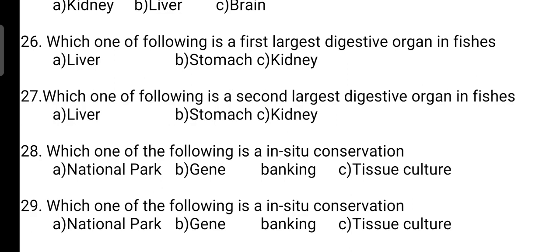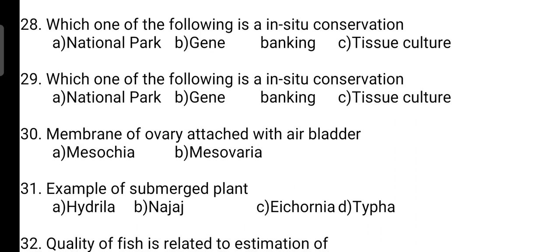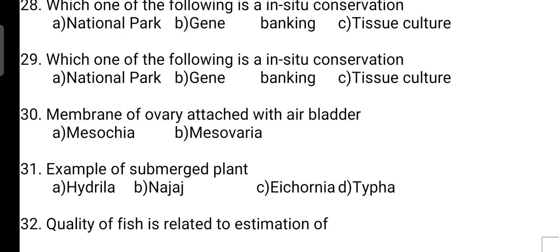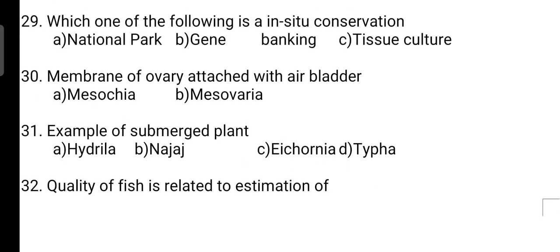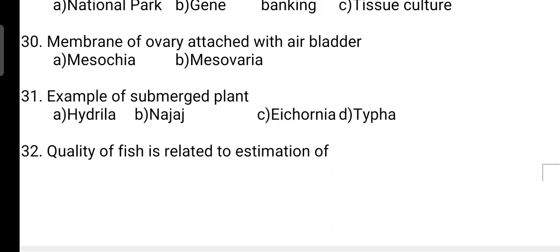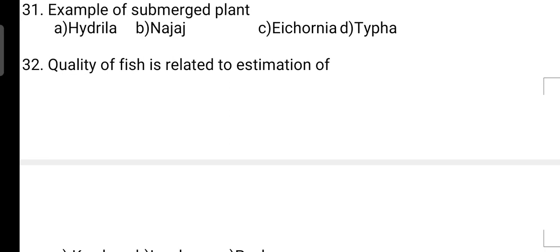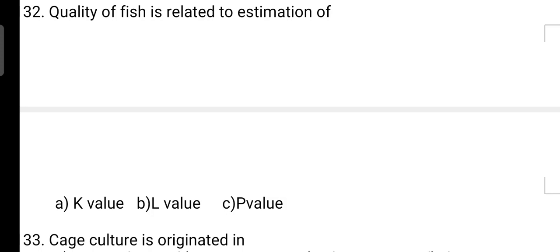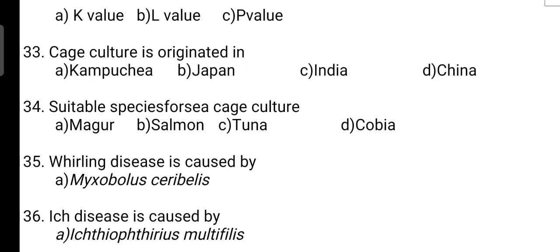Both day is the measure used for calculation of maximum sustainable yield. Kupffer cells are found in the liver. Which one of the following is the first largest digestive organ in fishes? Correct answer is Option A — it is liver. Which one is the second largest digestive organ? Correct answer is Option B — it is stomach. Which one is in-situ conservation? Correct answer is Option A — it is national park. Gene banking comes under ex-situ conservation.